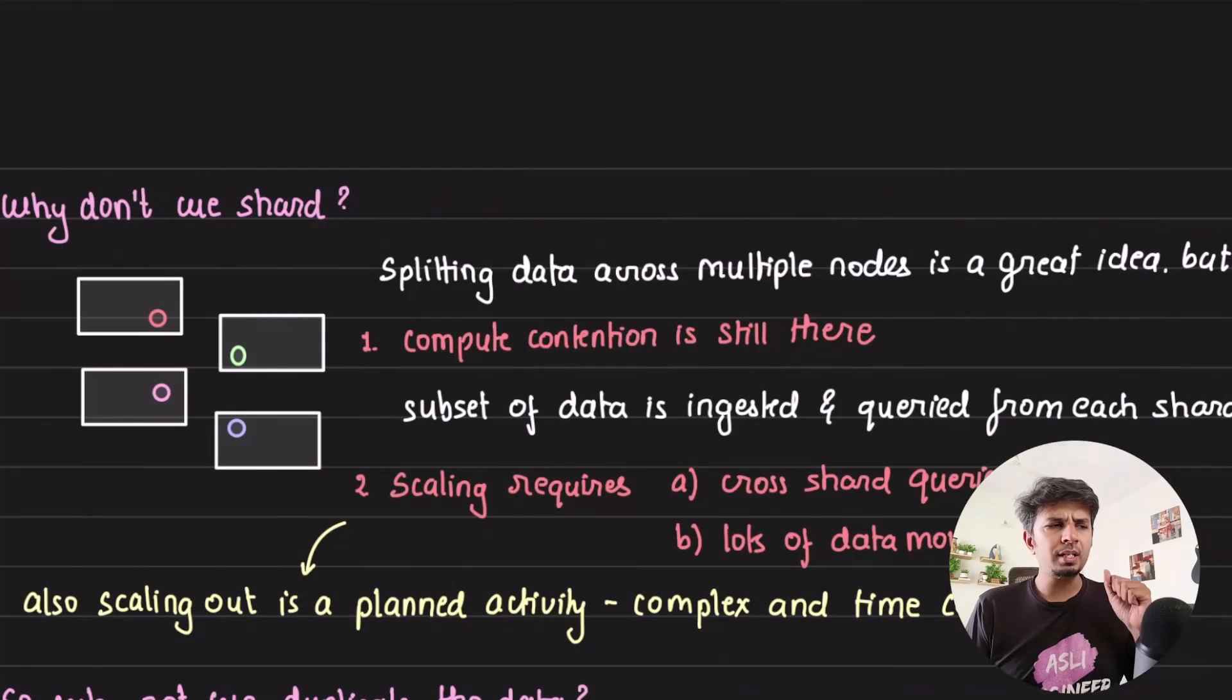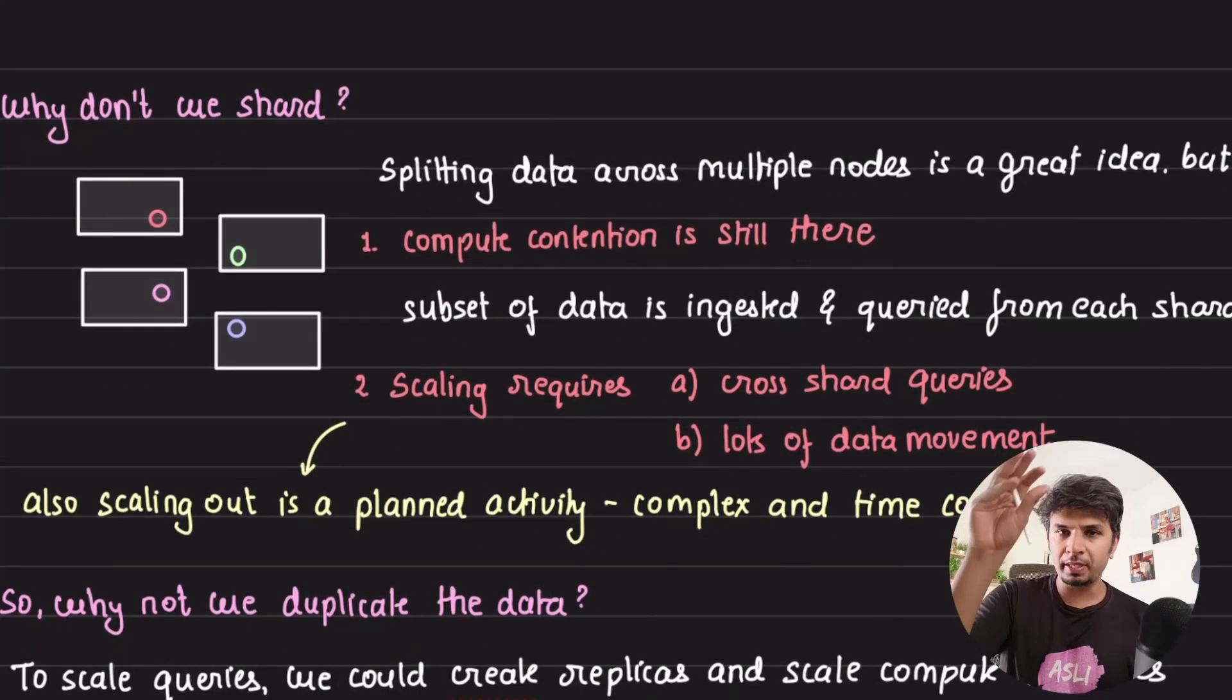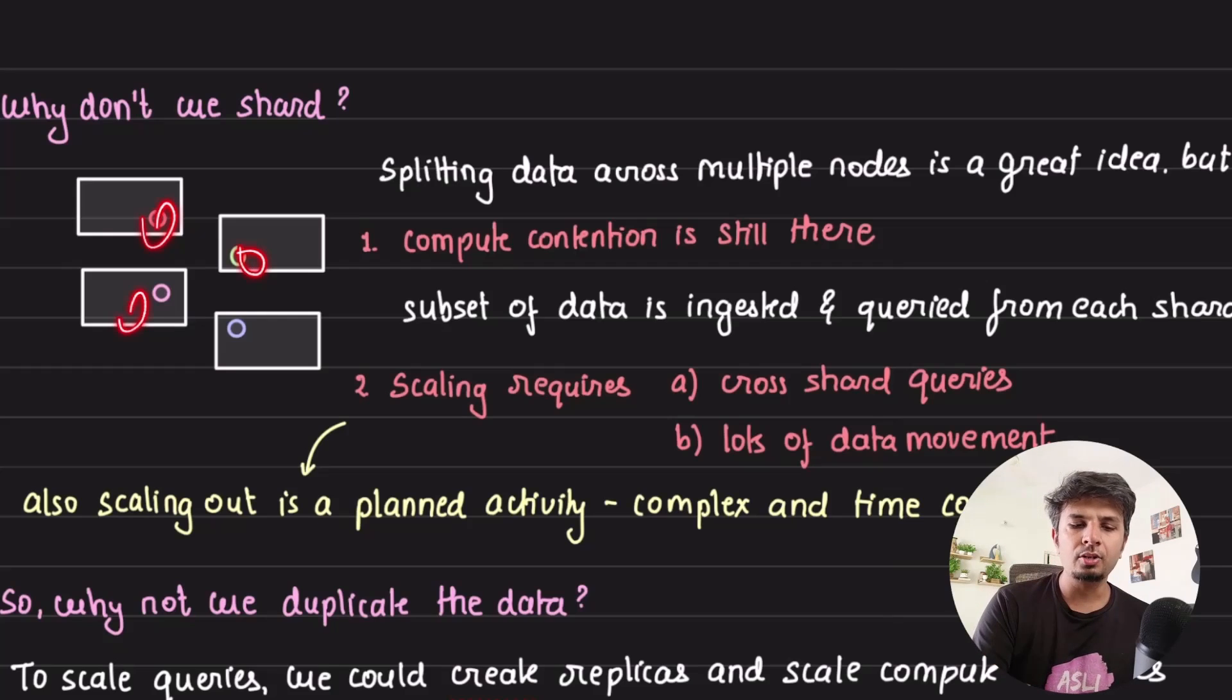You would say, but if that is the problem, let me think of sharding, because that is a natural progression that we go in. So sharding is about splitting your entire data into smaller subsets and distributing across multiple nodes. Now you would say, oh, this seems to be solving a problem. It does, it solves some of the problem. But what it still does not solve, is the compute contention.